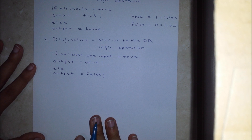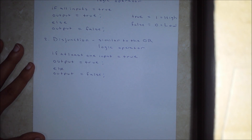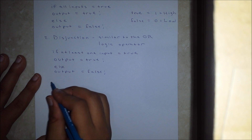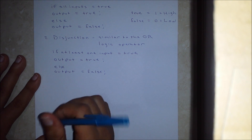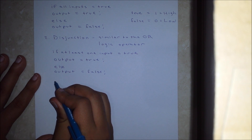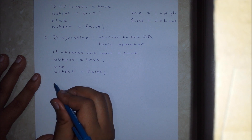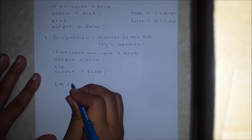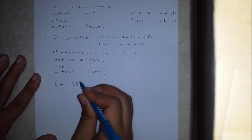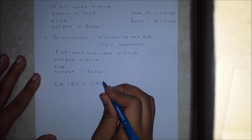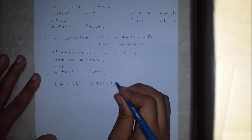Now that we have discussed the terms, we shall continue to properly explain the rules that conform De Morgan's laws. These rules go as follows: the negation of a conjunction is the disjunction of the negations. This can be expressed as: the complement of A and B is the De Morgan's equivalent to the complement of A or the complement of B.